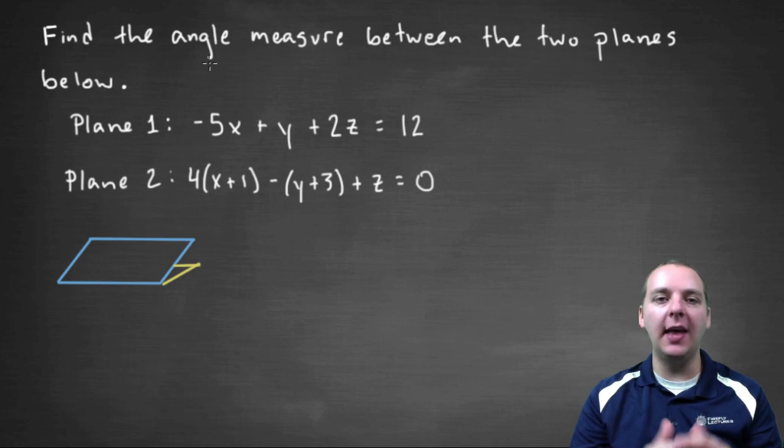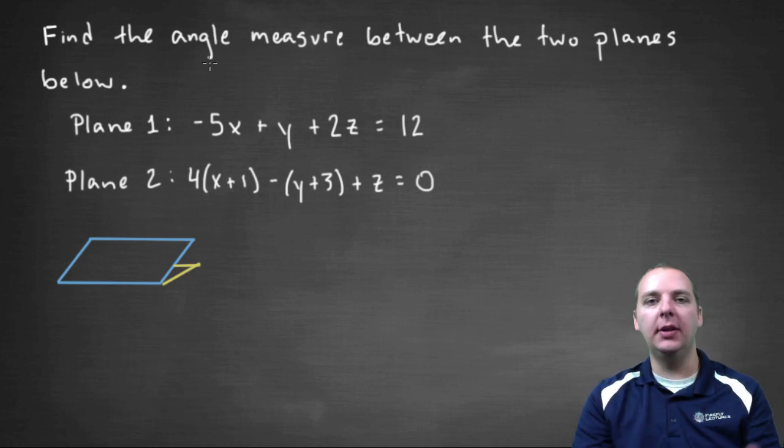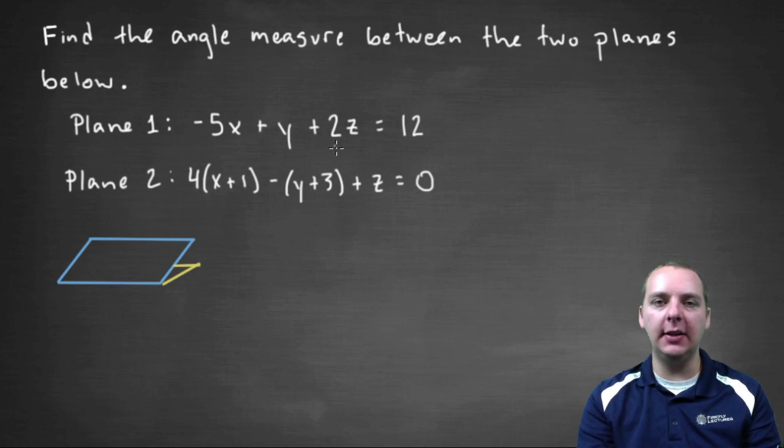In this exercise, we'd like to compute the angle measure between these two planes given here. Negative five x plus y plus two z equals twelve.